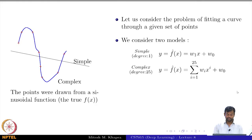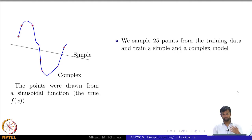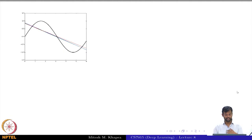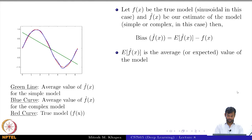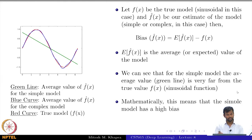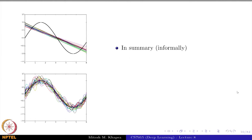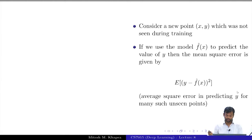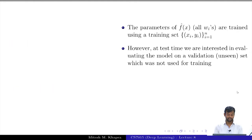We spoke about bias and variance and saw that simple models have high bias but low variance, and complex models have low bias and high variance. We saw illustrative examples of what that means and the formal definitions of bias and variance. The important concept we discussed was training error versus test error.